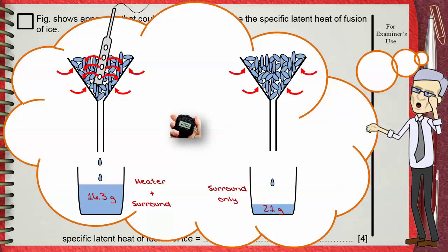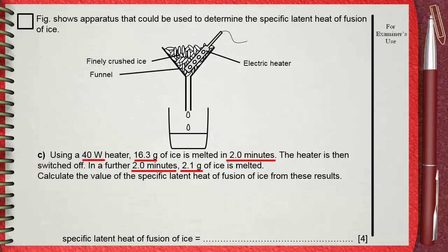Let's find out the givens. T is 120 seconds. P, the power, is 40 watts. Our mass will be 16.3 minus 2.1, this equals 14.2 grams.